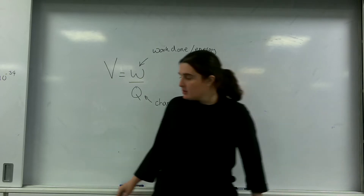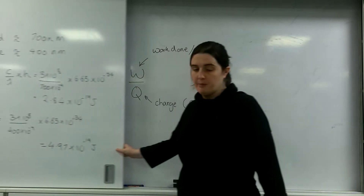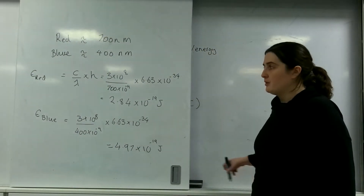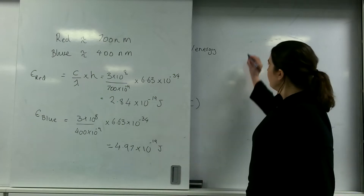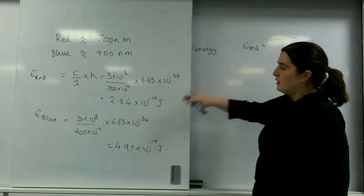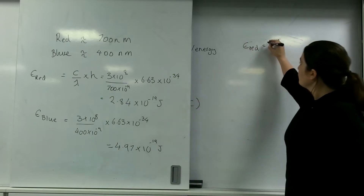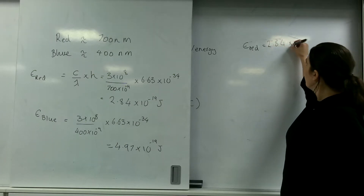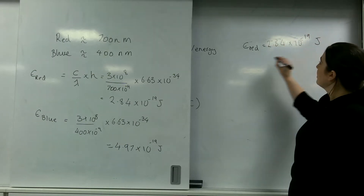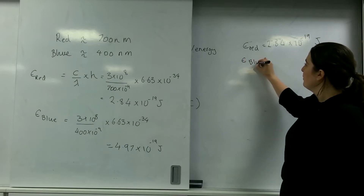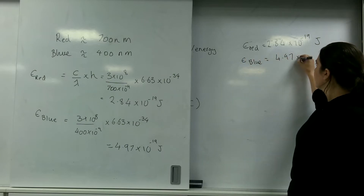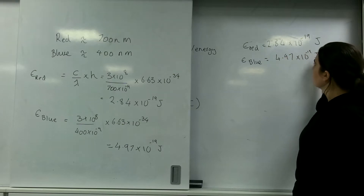I'm going to bring out a question I did in my last video about photons. I knew that the energy for red light was 2.84 times 10 to the minus 19 joules, and my energy for blue light was 4.97 times 10 to the minus 19 joules.